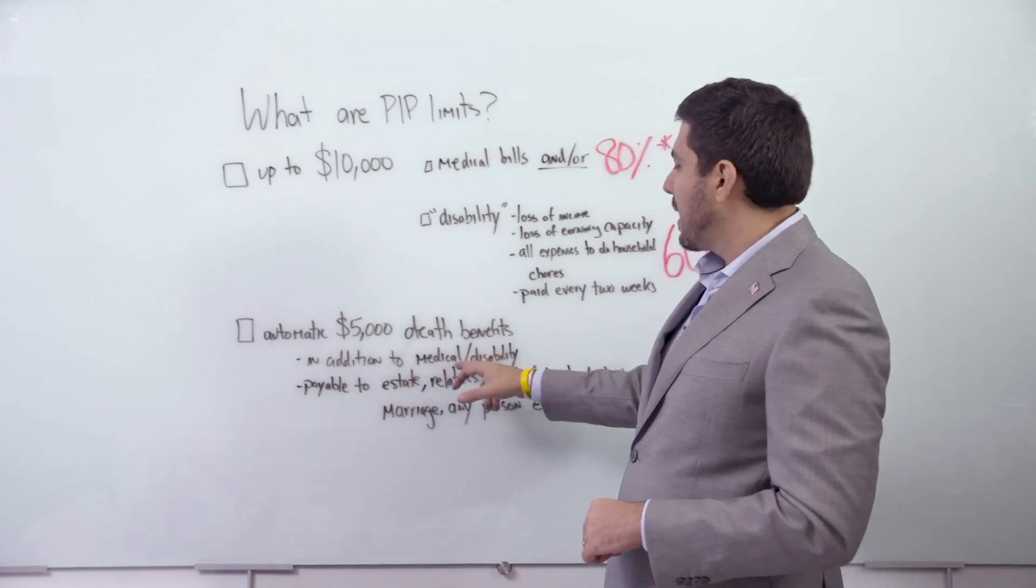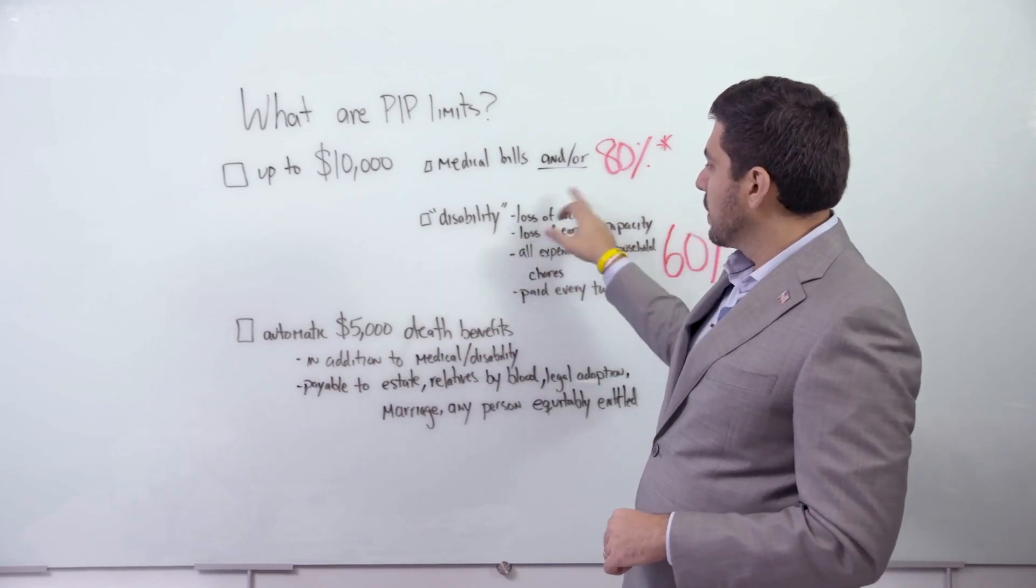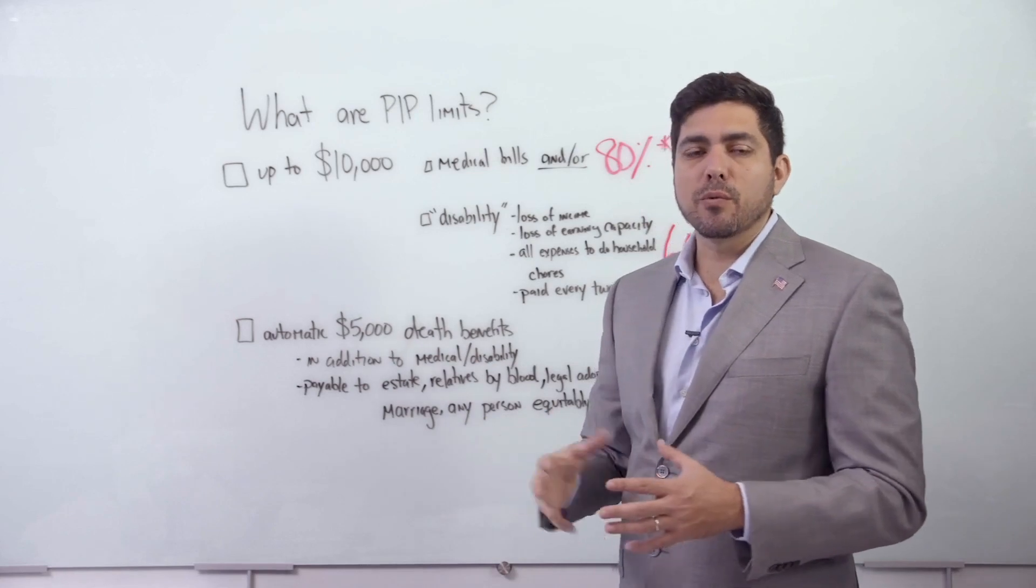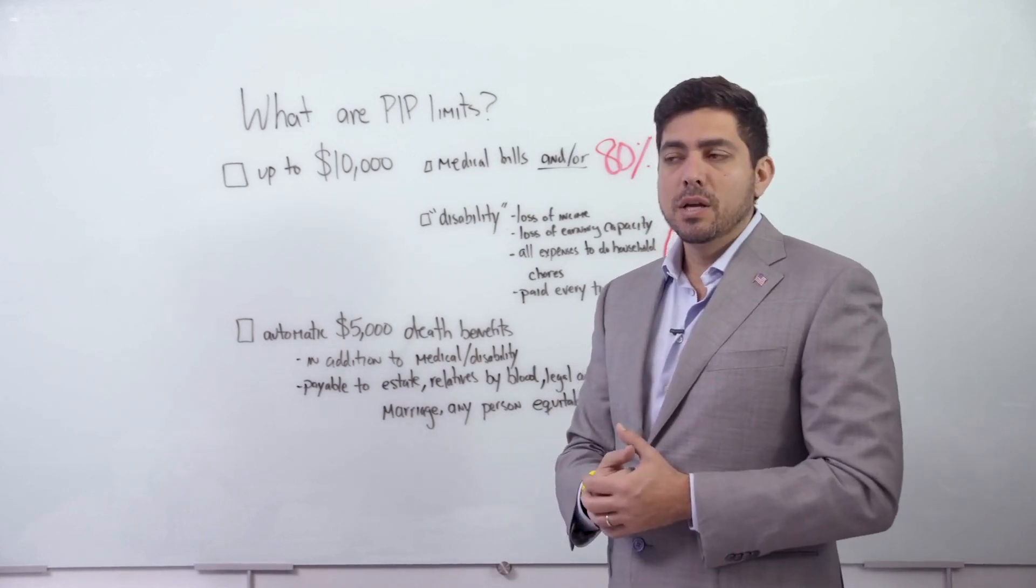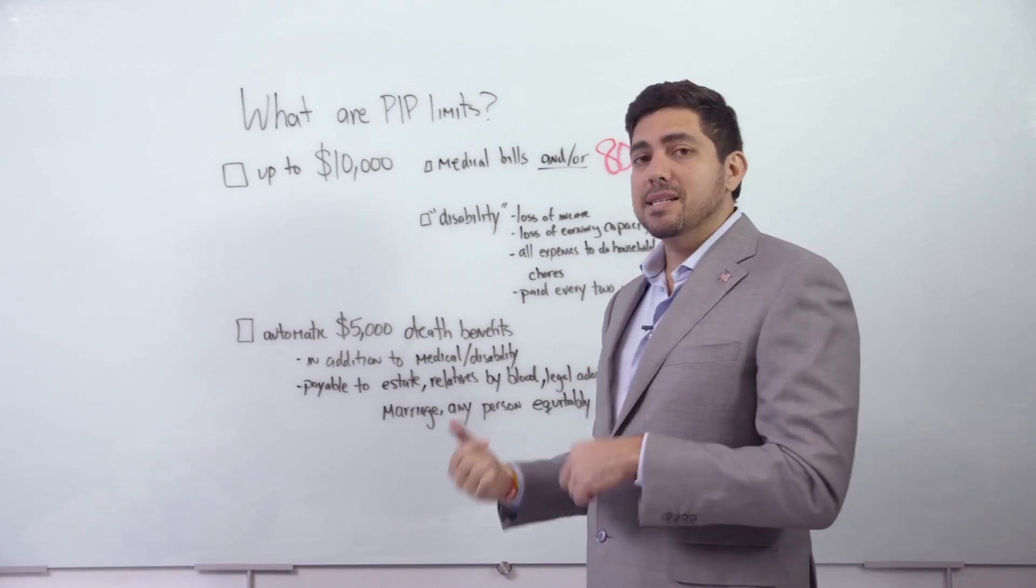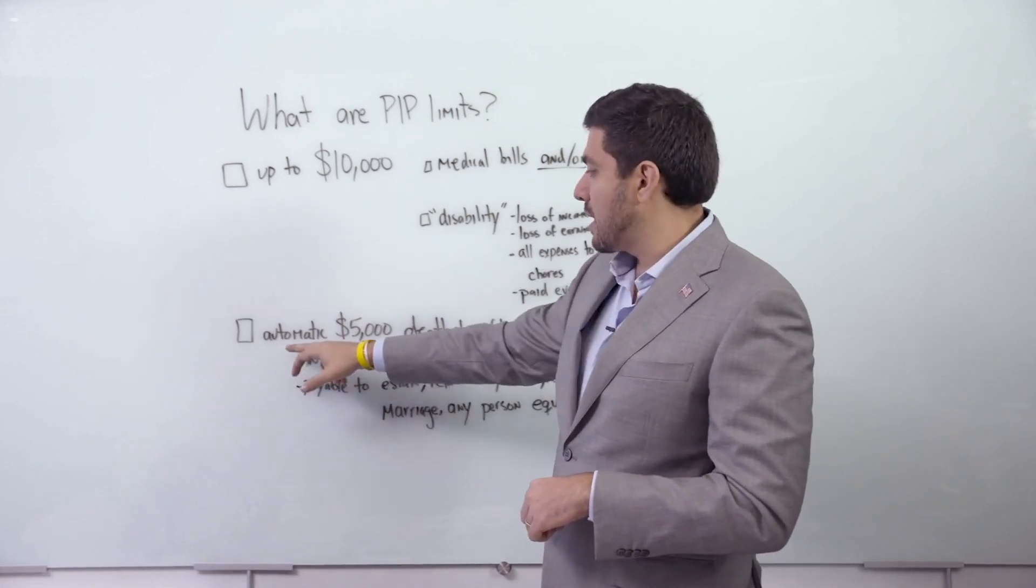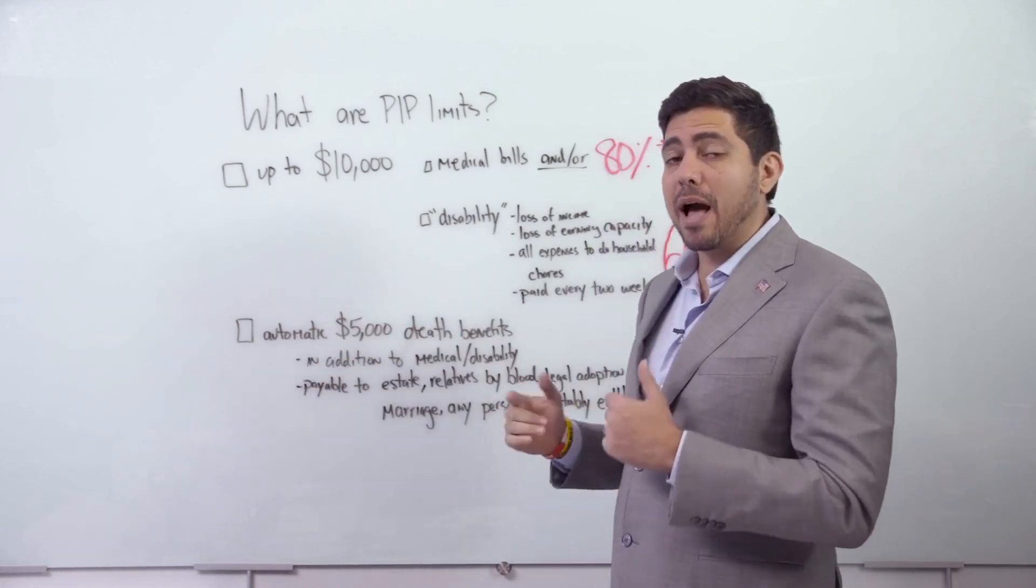It's in addition to medical benefits and disability. Disability is the loss of income that we talked about. So if someone gets in a really bad wreck, goes to the hospital, and dies the next day, they should get up to $10,000 in medical bills plus an automatic $5,000, so $15,000 total.